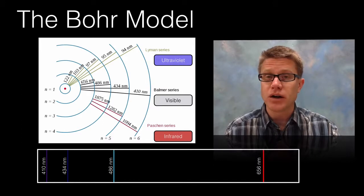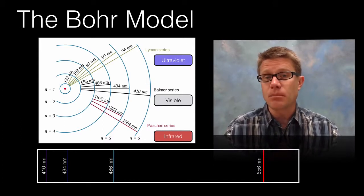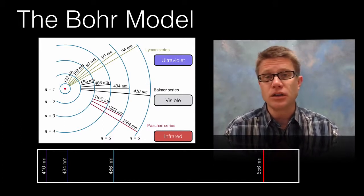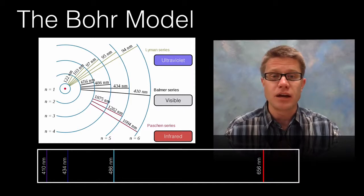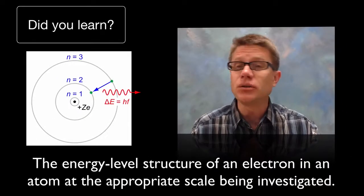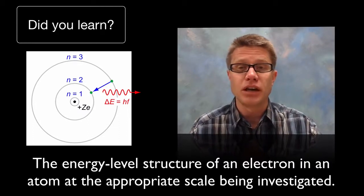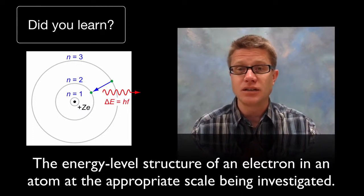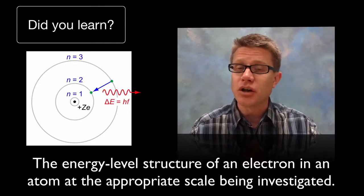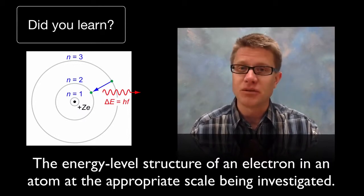And so again this only works for hydrogen. And so it is a good step model or it is a good model to get you started on understanding how the atom is really put together. But did you learn the energy level structure of an electron in an atom at the appropriate scale being investigated? In this case it is at these energy levels in hydrogen atom. I hope so. That is the Bohr model and I hope that was helpful.